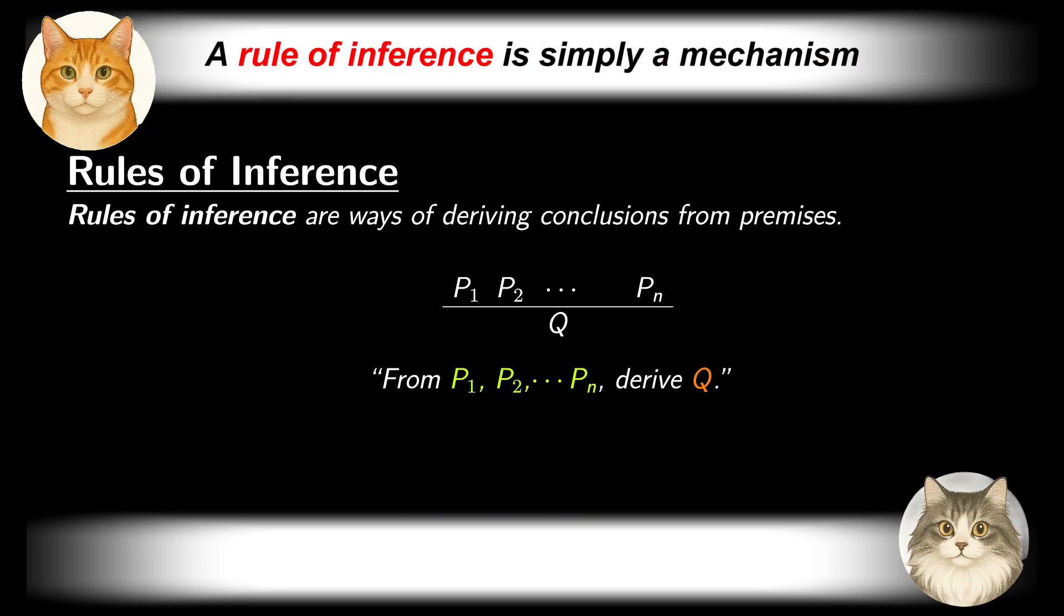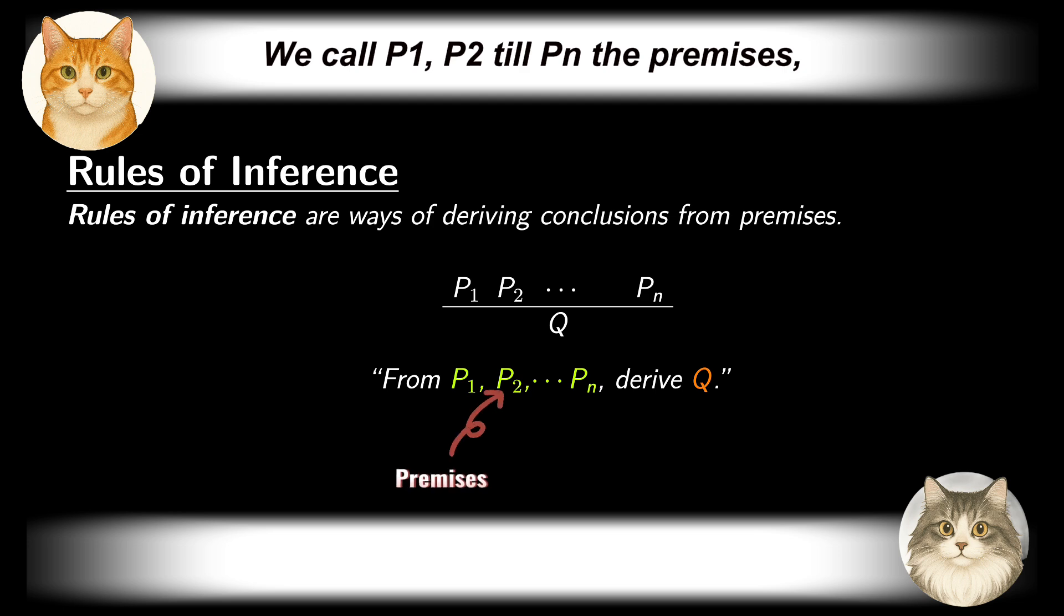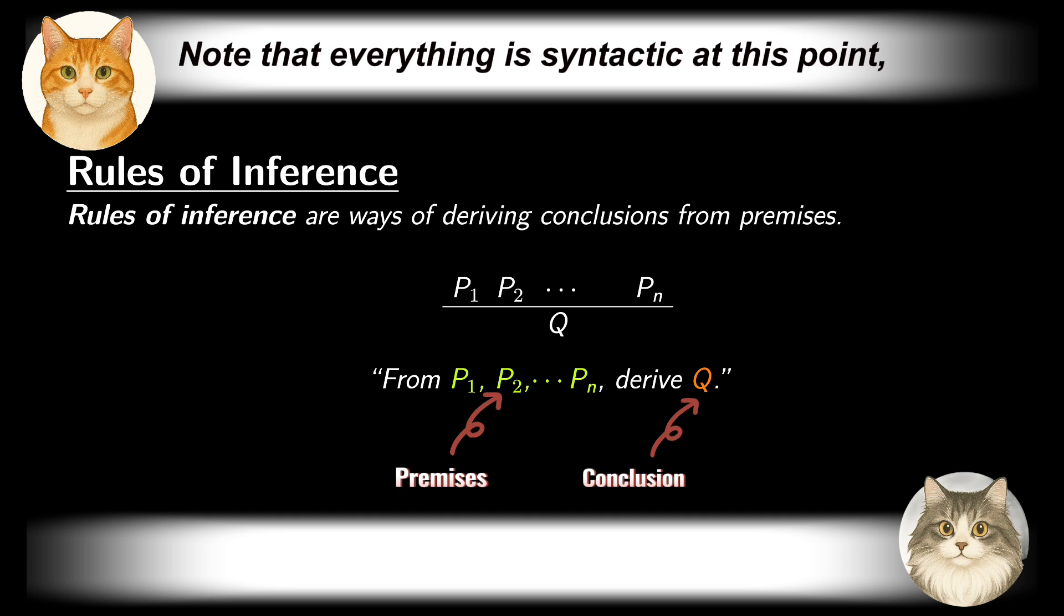A rule of inference is simply a mechanism for deriving a new proposition Q from a collection of propositions of certain forms, denoted by p1, p2 until pn. We call p1, p2 till pn the premises, and Q the conclusion derived from the premises. Note that everything is syntactic at this point, and we have not yet considered whether the premises or the conclusion are true or false.